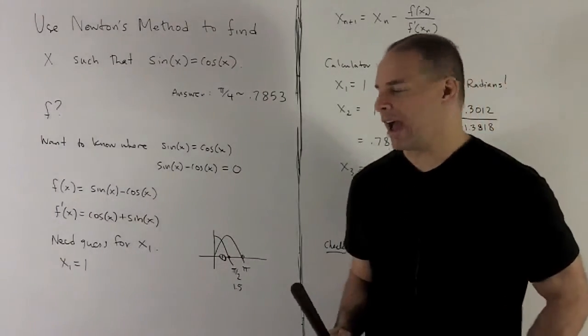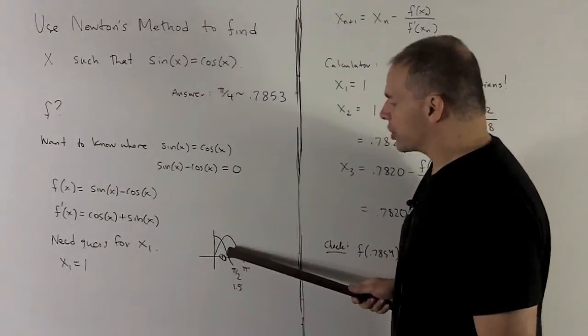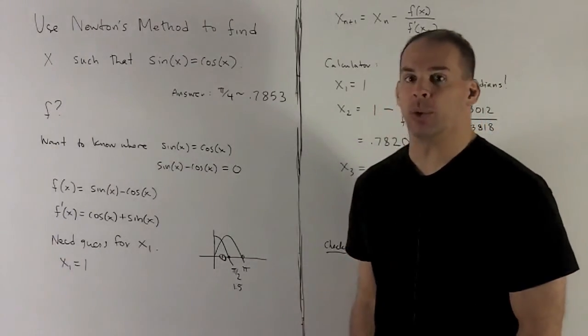Pi halves is roughly 1 and a half. So a good number to start with in that region is going to be x1 equal to 1.